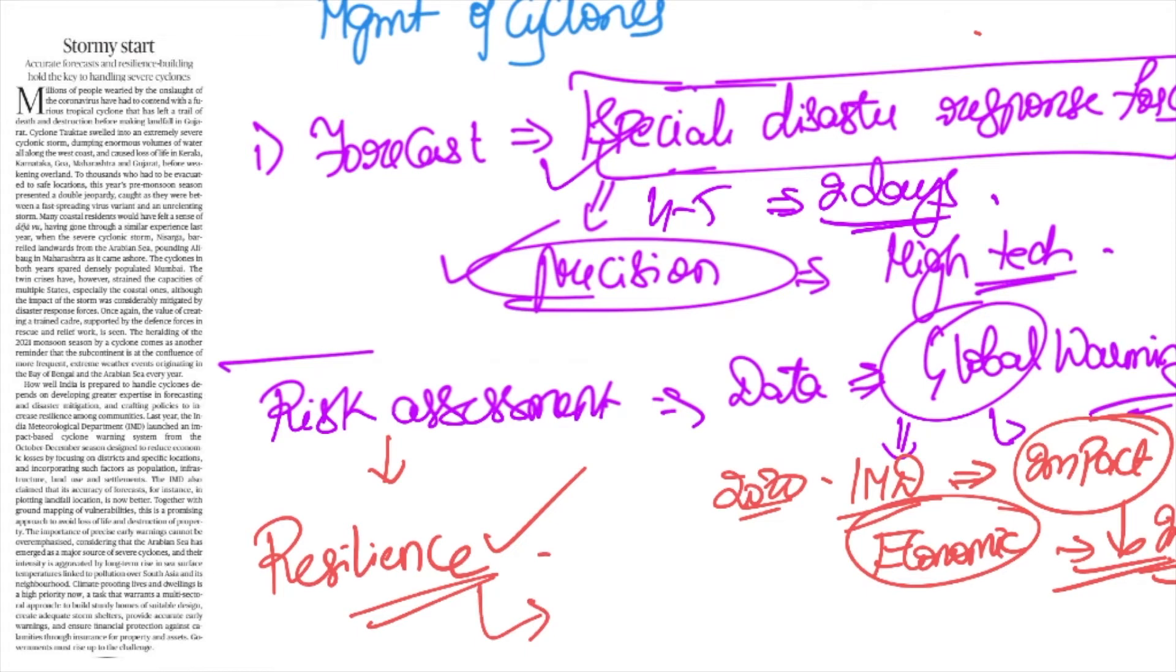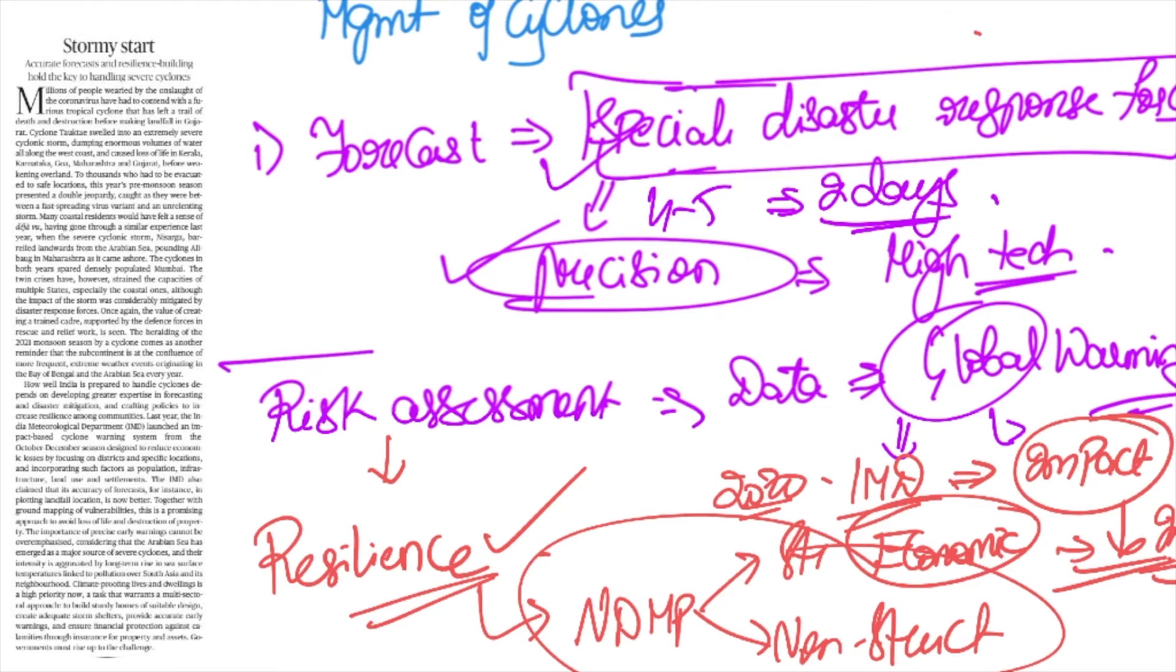Apart from this, according to the national disaster management plan, we have certain structural and non-structural measures. All those should be implemented on a priority basis to reduce the impact of cyclones going forward.